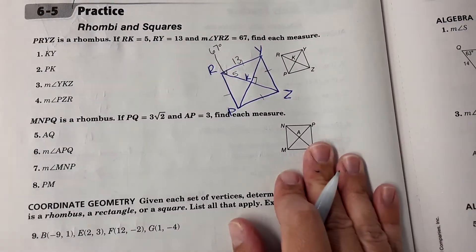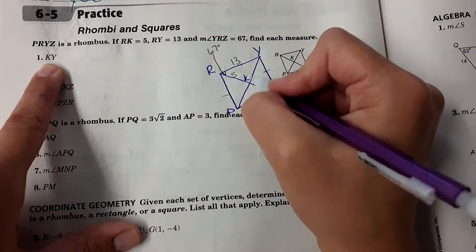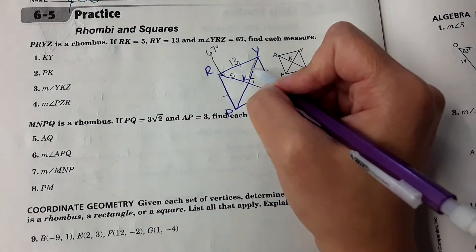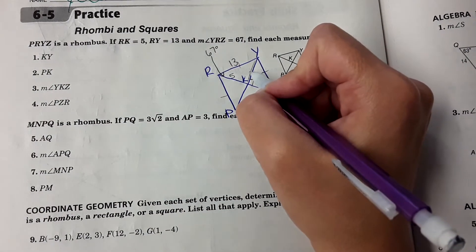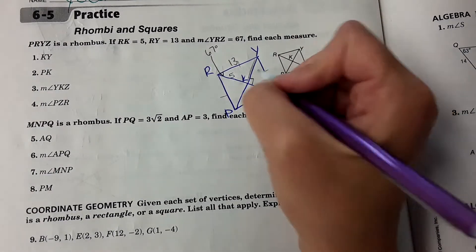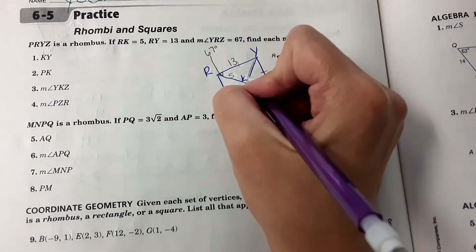Okay, number one, it wants to find this measure here. If this was a perfect square, it would be 5. But it's not, it's a rhombus. They don't tell us it's a square. We're going to have to solve for this, and the way we're going to solve for it is using Pythagorean theorem.